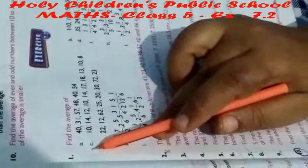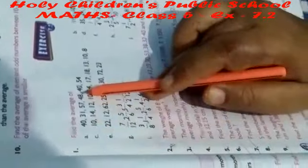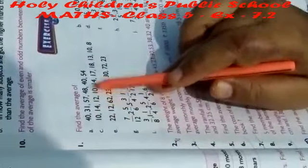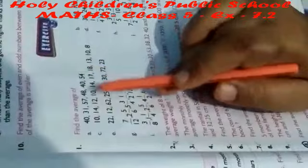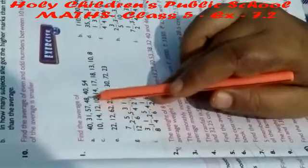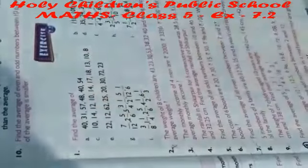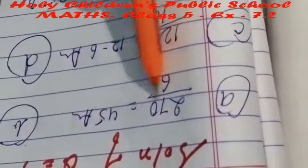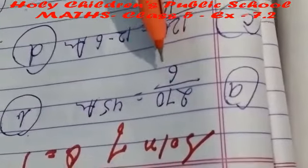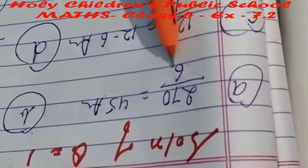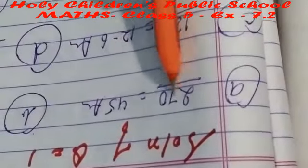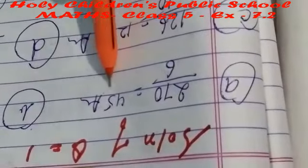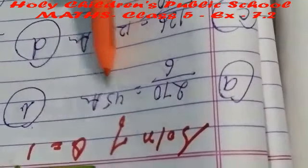First, the average formula is the sum of the total numbers divided by the total count of numbers. There are 6 numbers: 1, 2, 3, 4, 5, 6. The total sum is 270, and there are 6 numbers. 270 divided by 6 is equal to 45. The average is 45.